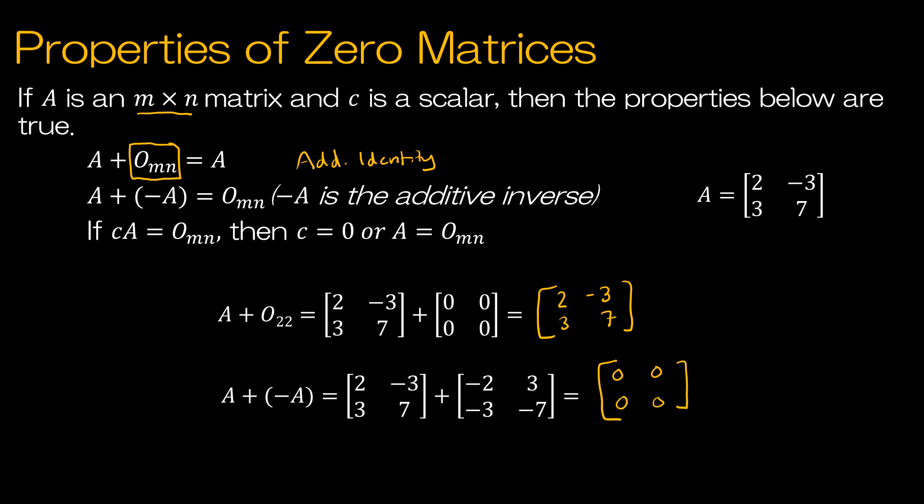And finally, we have: if C times A is equal to the zero matrix, then either C has to be 0 or A has to be the zero matrix. This makes sense — we're saying if 2 times X equals 0, we know X must have been 0. So if we have two unknowns, C and matrix A, one of those has to be 0 in order to end up with the zero matrix.